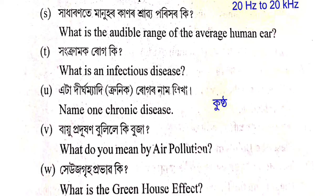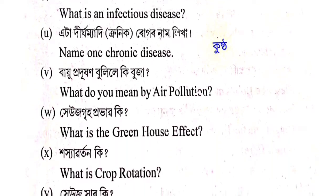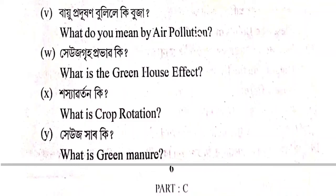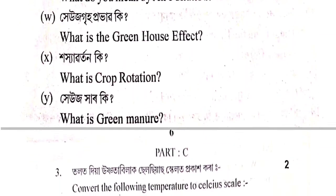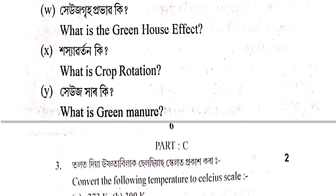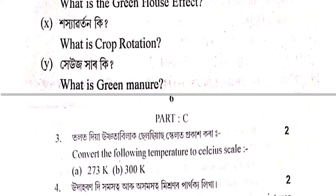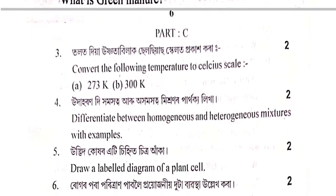Infectious disease: ito bemaar ezanor pra anazanor huswari ba parheato kekwa infectious disease. Eta diggha mea di rugar naam likha — name one chronic disease. The answer is kustha (leprosy). Bayo prodoorkhan bulile ki buza — what do you mean by air pollution? Henghuz griha prabhap ki — what is the greenhouse effect? Haishya botan ki — what is crop rotation? Henghuz haar ki — what is green manure?